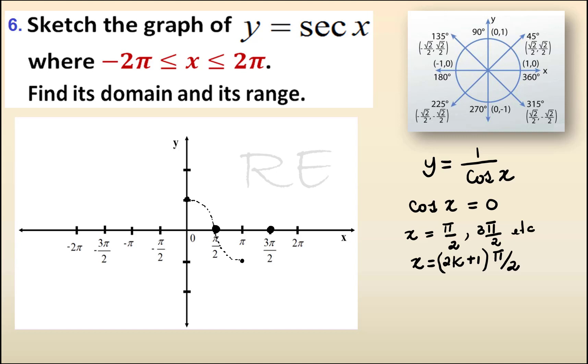We are going to sketch the graph of cosine, which is a cup, and then the zeros automatically become vertical asymptotes.